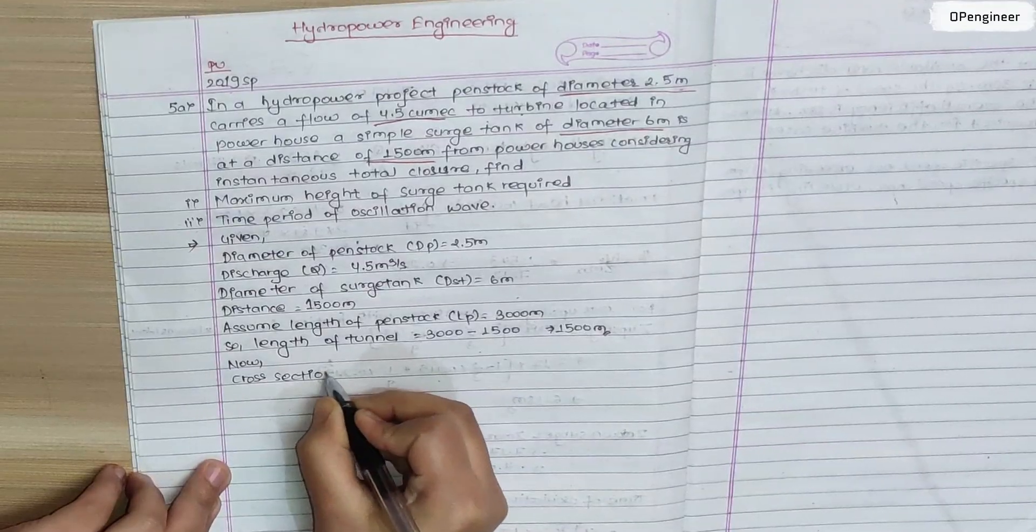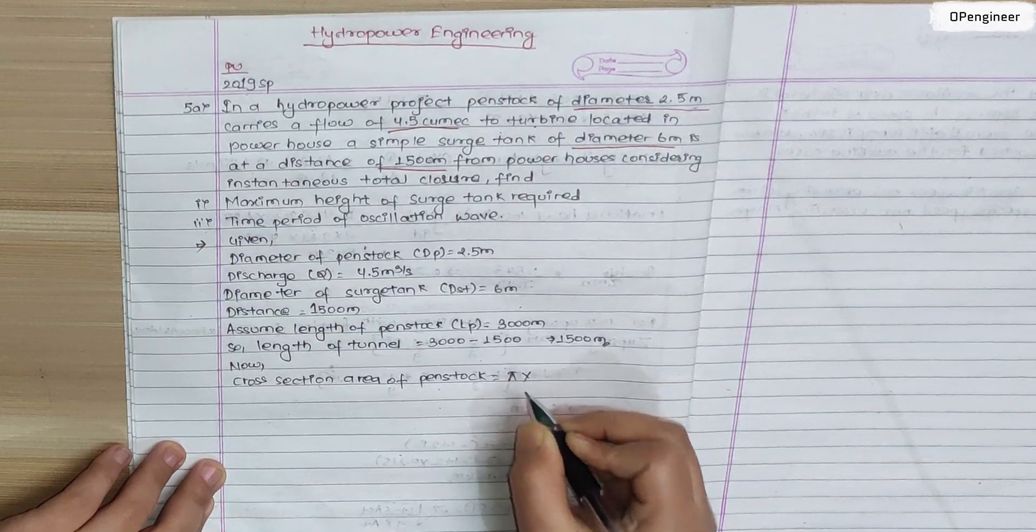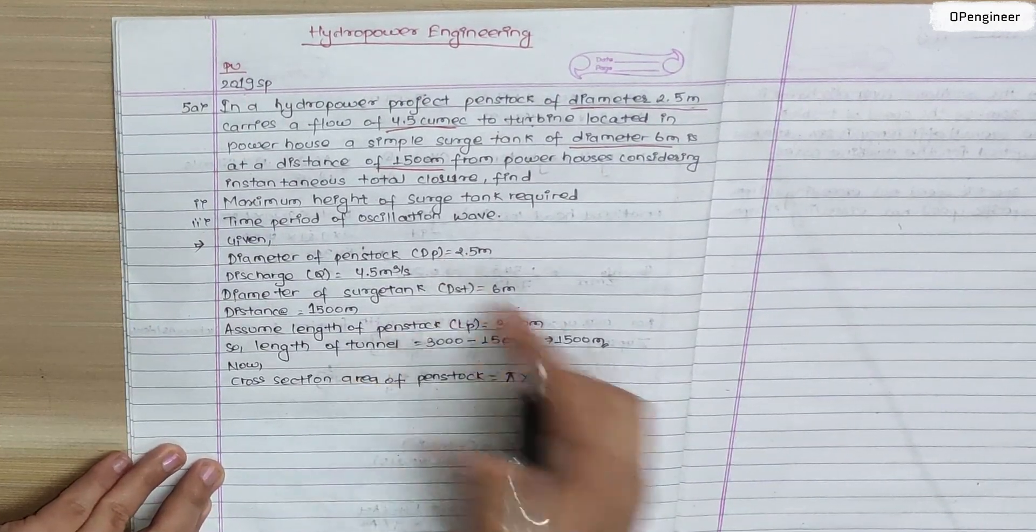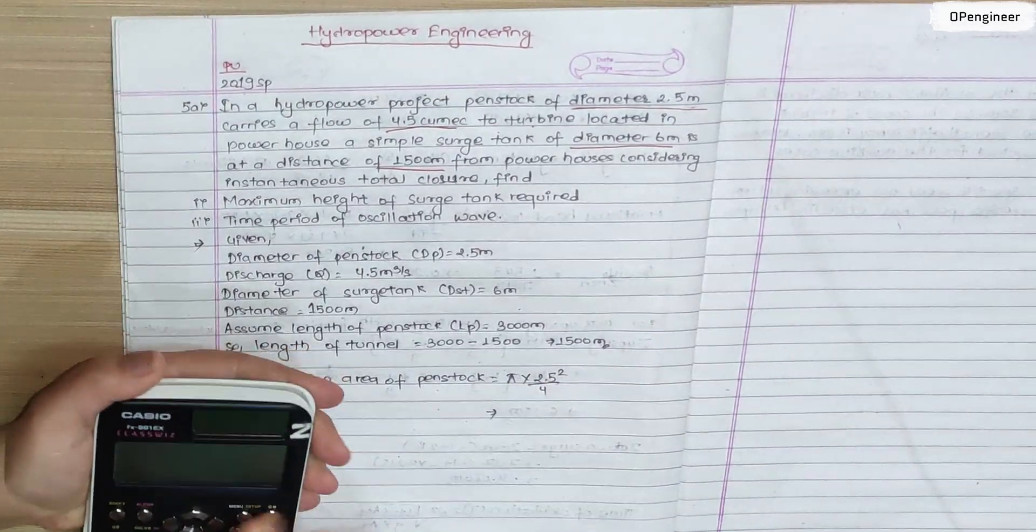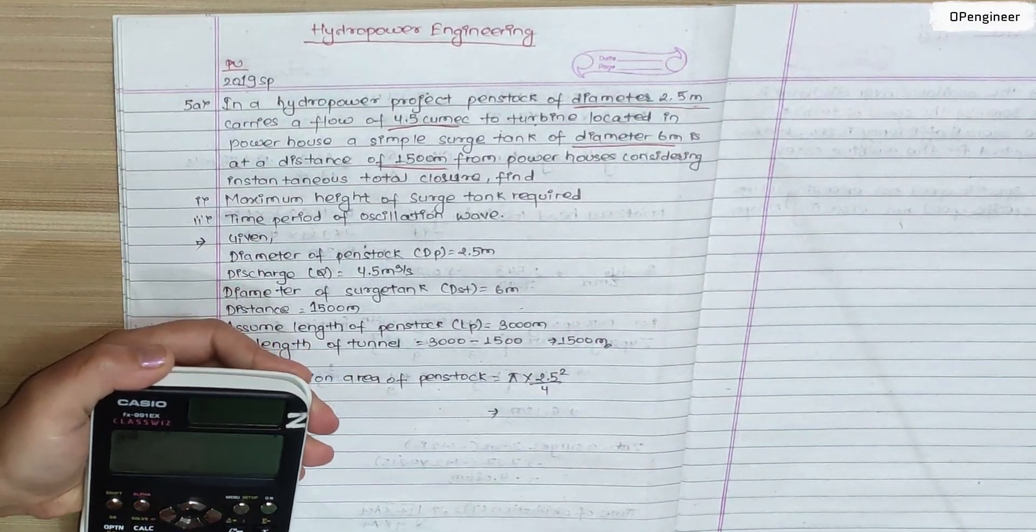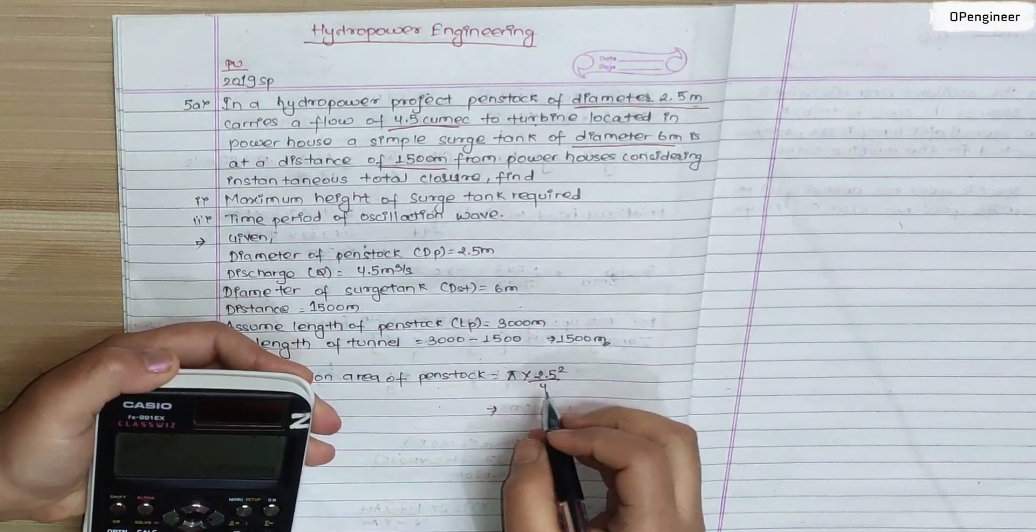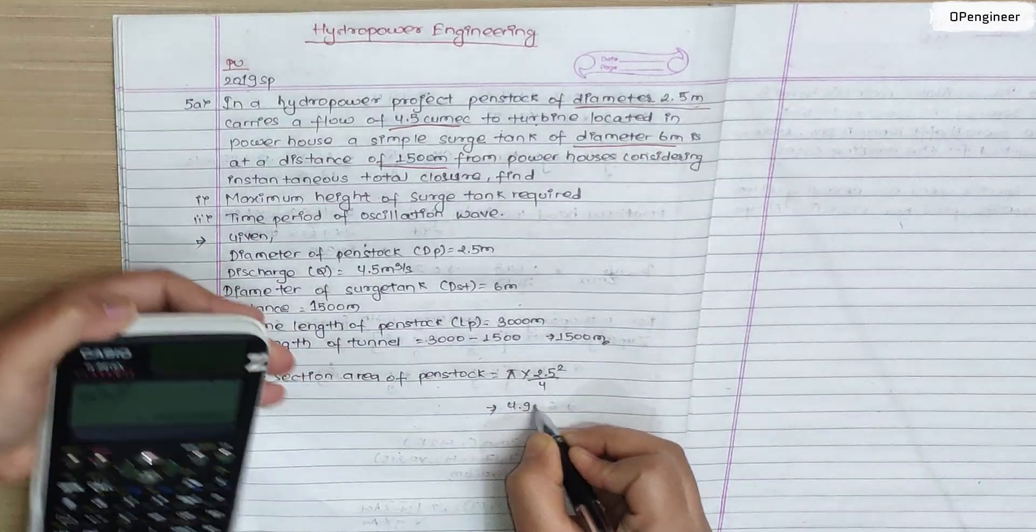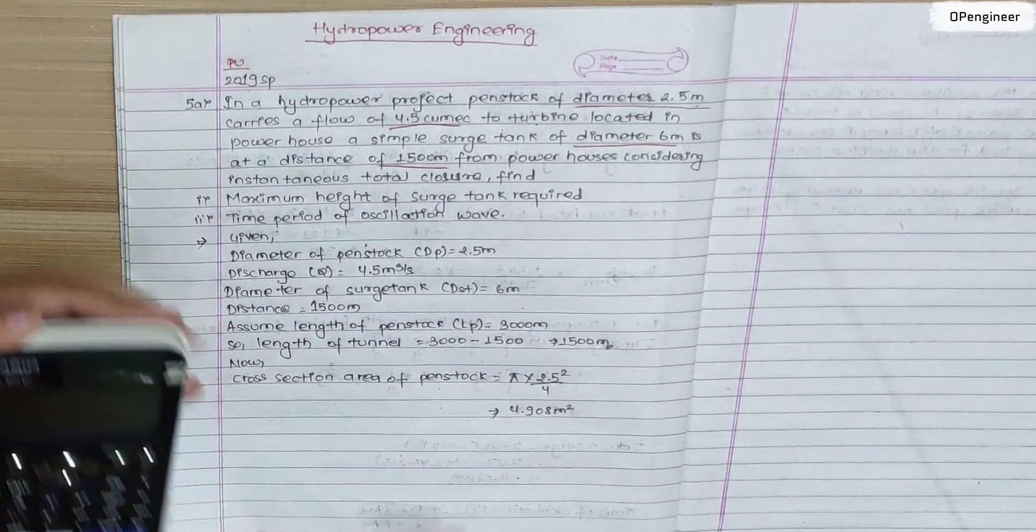First, cross-section area of penstock. So, area of penstock is pi times diameter 2.5 squared by 4. This is pi into 2.5 squared by 4. This is 4.908 meter square, cross-section area of penstock.